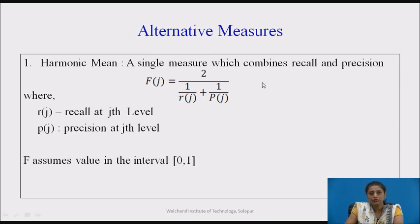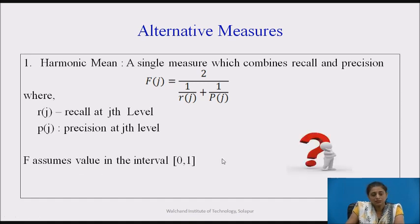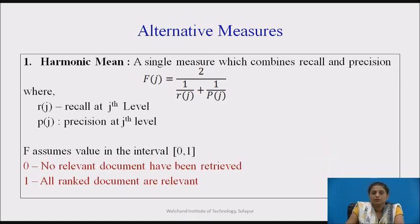Alternative measures include the harmonic mean (F-measure), a single measure combining recall and precision. The formula is: F(j) = 2 / (1/r(j) + 1/p(j)), where r(j) is recall and p(j) is precision at the jth level. F assumes a value between 0 and 1. A value of 0 means no relevant document has been retrieved, whereas 1 means all ranked documents are relevant.